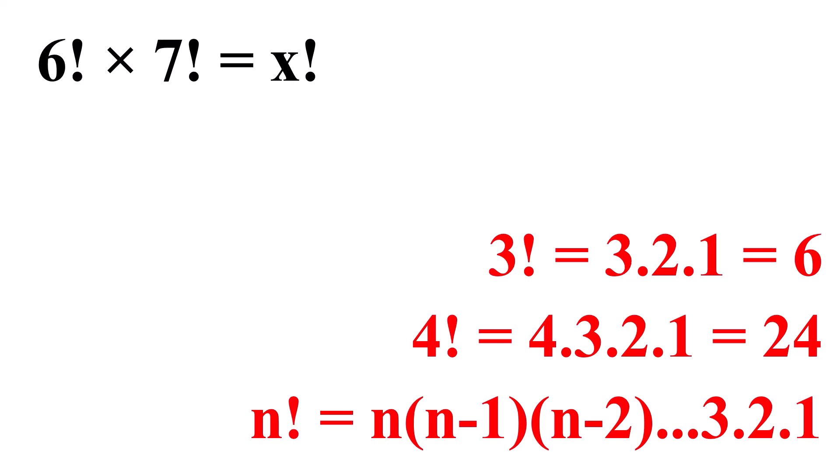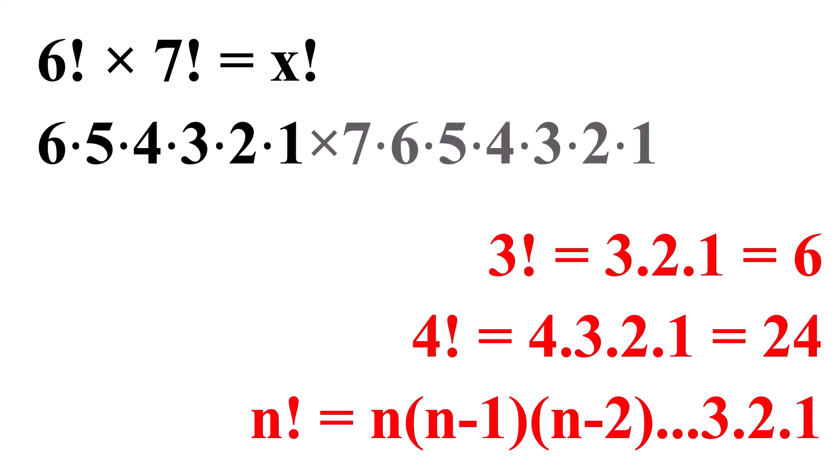Now, applying this in our equation: 6 factorial is equal to 6 times 5 times 4 times 3 times 2 times 1, and 7 factorial is 7 times 6 times 5 times 4 times 3 times 2 times 1, which is equal to x factorial.